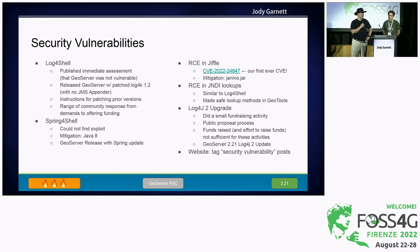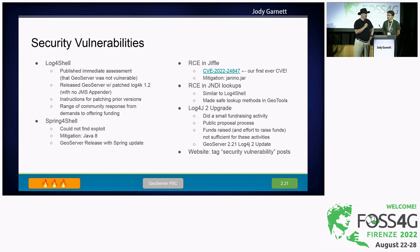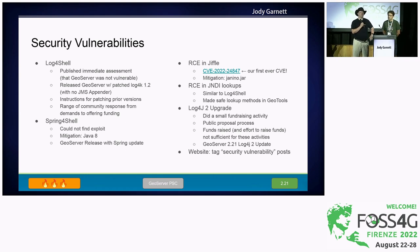There were a number of security vulnerabilities that hit us this year. Log4Shell was the one popular in the press. There was also a minor one, Spring4Shell — we couldn't find an exploit and the mitigation was to run in Java 8, but we did release a copy of GeoServer with that vulnerability patched. We also had our own security vulnerability — our first one to get an official CVE number was a vulnerability in our GIFL scripting language. Please update your GeoServers.